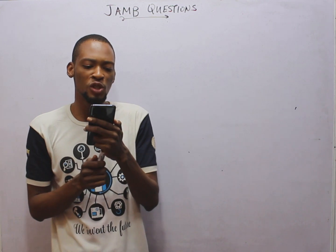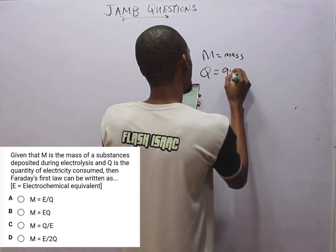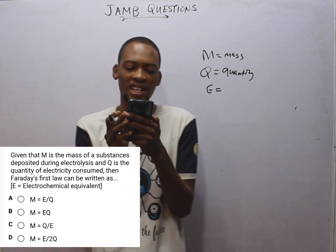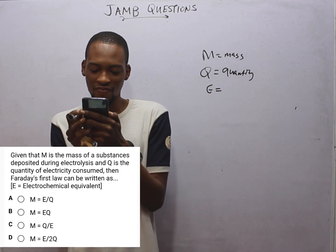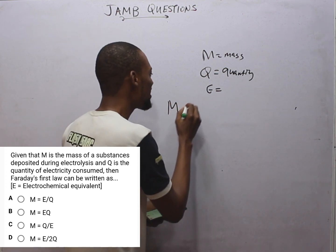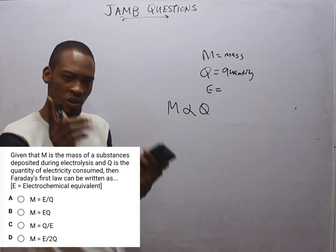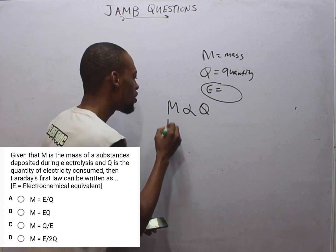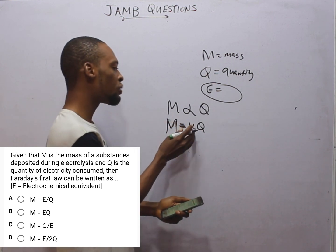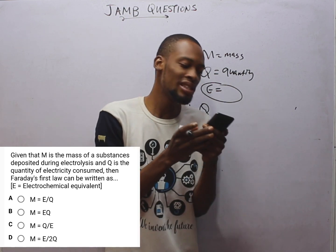Given that M is the mass of a substance deposited during electrolysis, Q is the quantity of electricity, and E is the electrochemical equivalent — Faraday's first law can be written as: the mass of a substance deposited during electrolysis is directly proportional to the quantity of electricity. We introduce a constant to replace proportionality, and that constant is the electrochemical equivalent E. Therefore, M = EQ. Looking at the options, M equals EQ where E is the constant (electrochemical equivalent). So option B is the correct option.